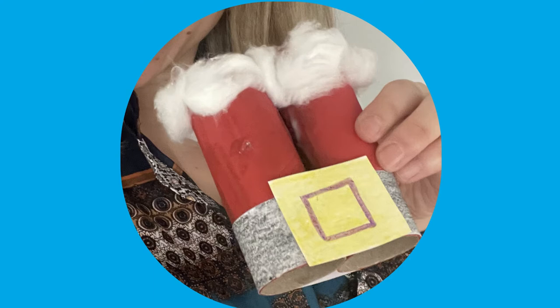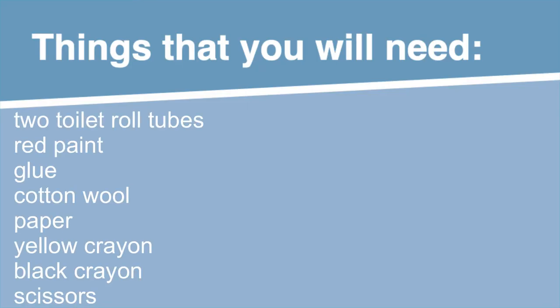Would you like to make your very own Santa binoculars like mine? Let's take a look at what you will need. You will need two toilet roll tubes, red paint, glue, cotton wool, paper, yellow crayon, black crayon, and scissors. Pause the video here whilst you gather what you need.